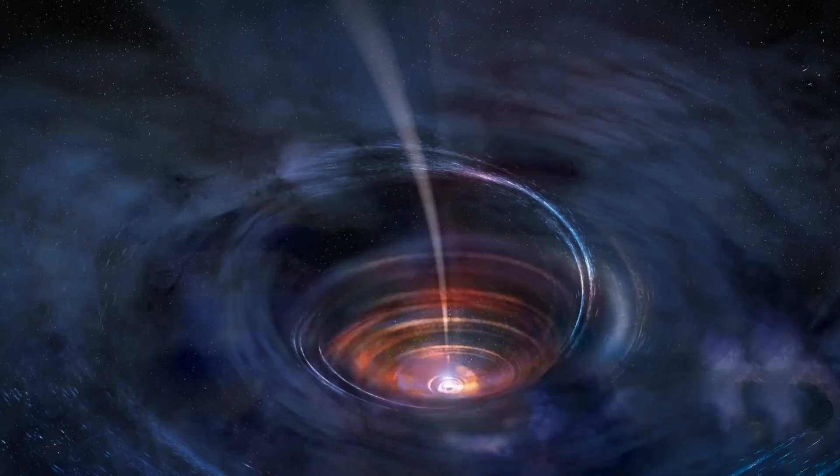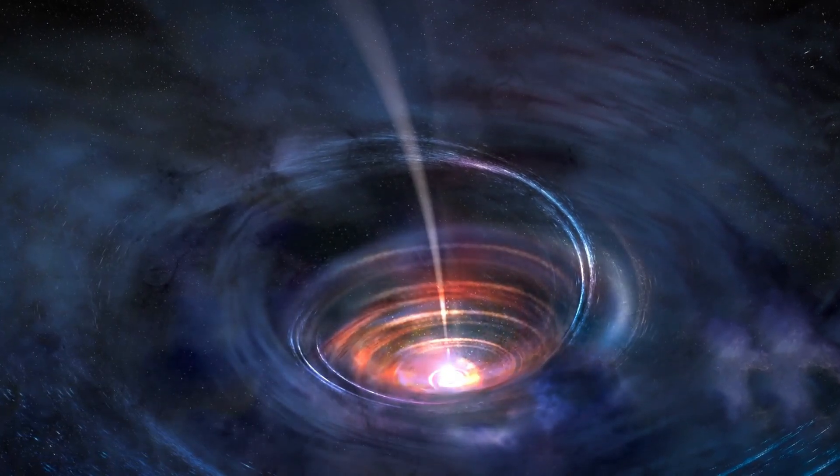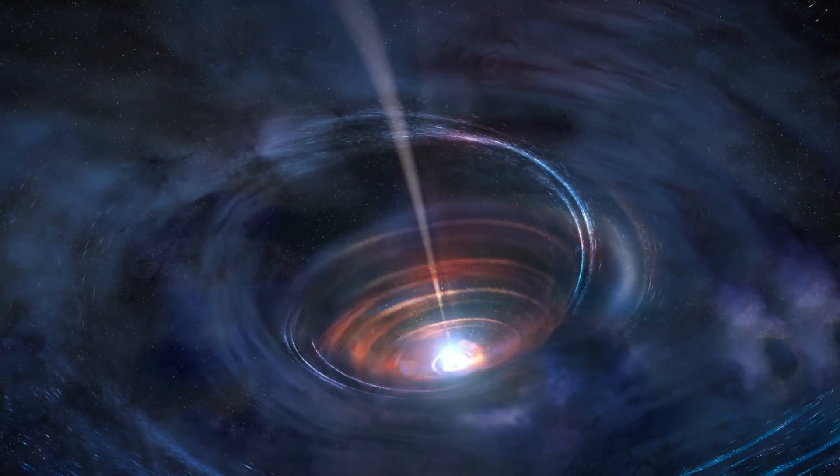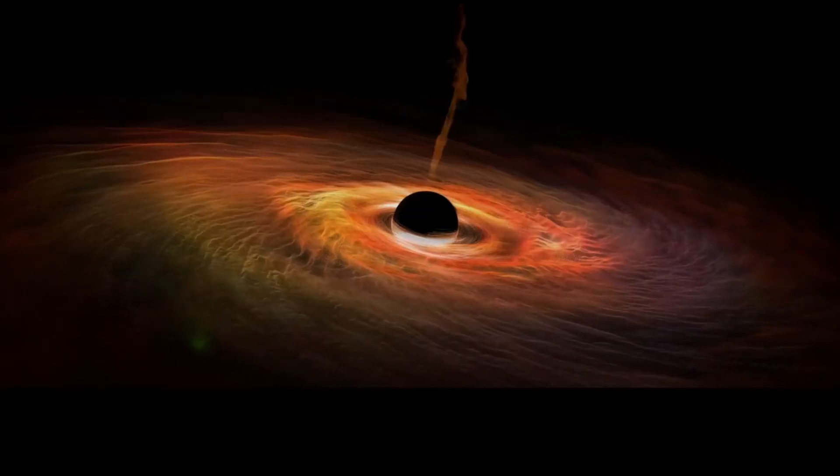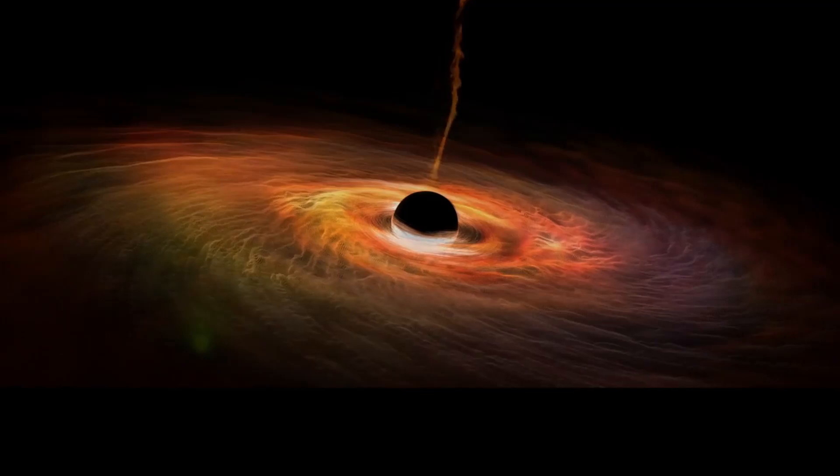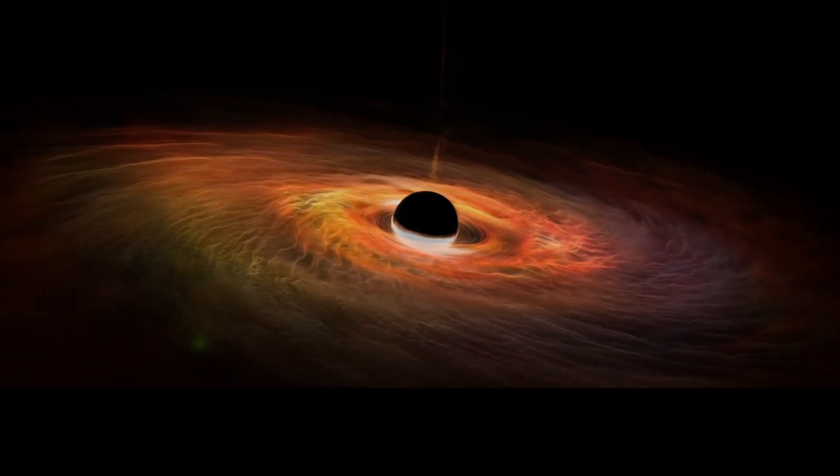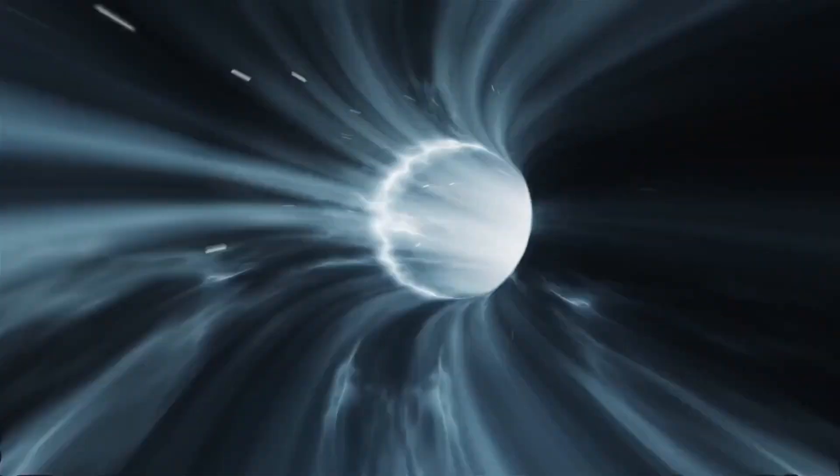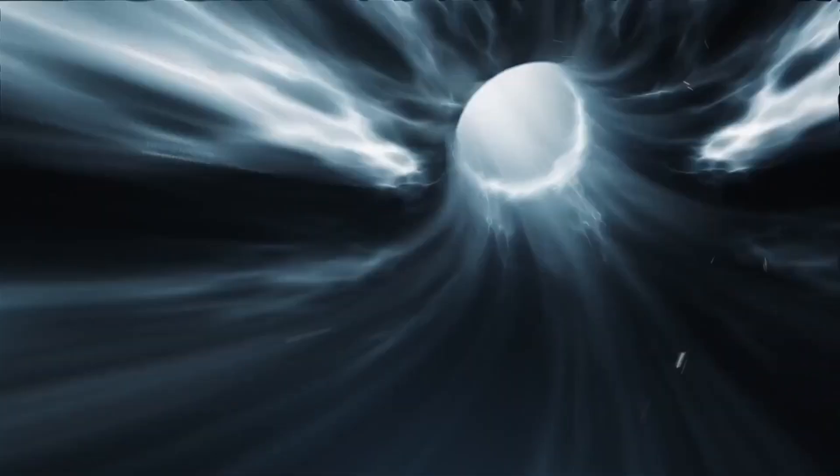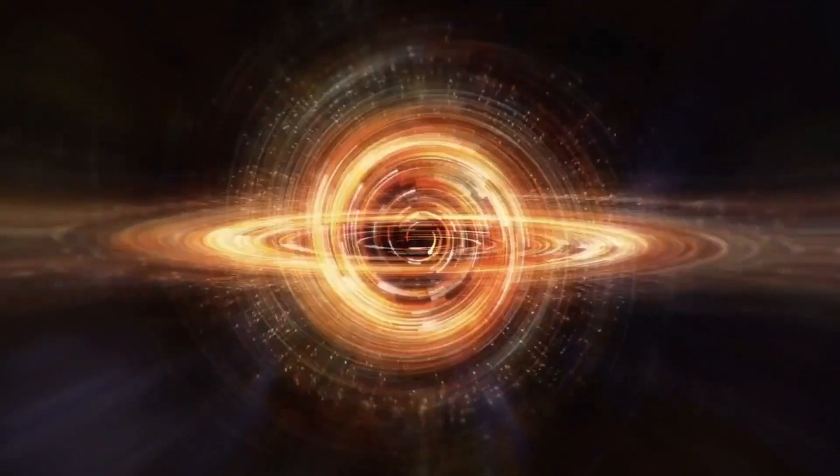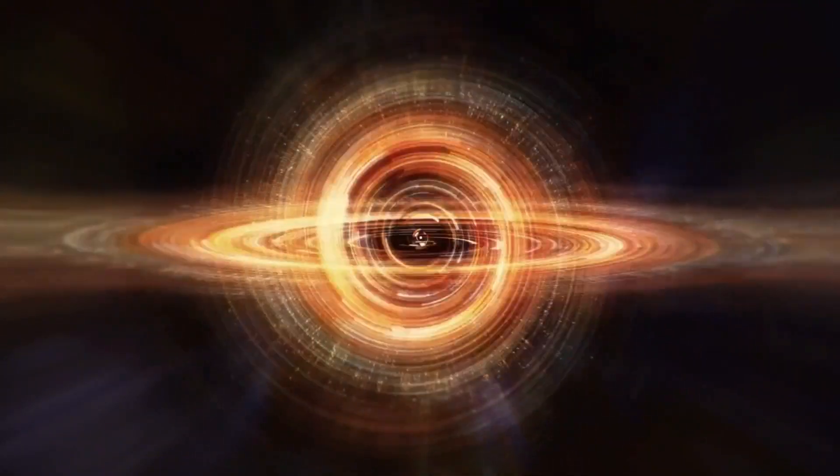The first of these layers is called the event horizon, which marks the point beyond which nothing can escape. The second layer, known as the photon sphere, is where light itself gets trapped, unable to escape due to the powerful gravitational forces at play. Finally, there is the singularity where all matter is compressed into an infinitely small point, a place where the very fabric of reality collapses and all known laws of physics break down.